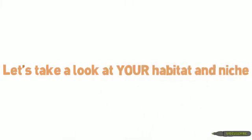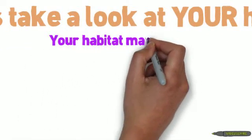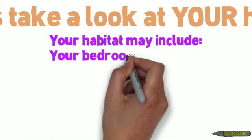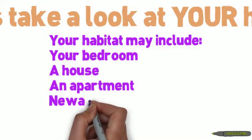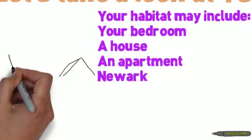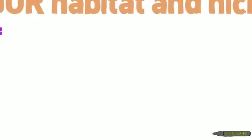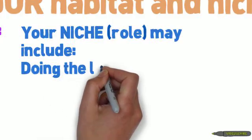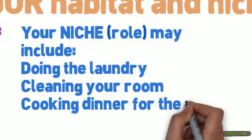Now that you know the differences, let's take a look at your habitat and your niche as a teenager. Your habitat, or where you live, may include your bedroom, your house, or maybe you live in an apartment, or even the city you live in, like Newark, Irvington, Bloomfield, or East Orange. Your niche, or role as a teenager living within your habitat, may include some chores, like doing the laundry, cleaning your room, or maybe even cooking dinner for the family.